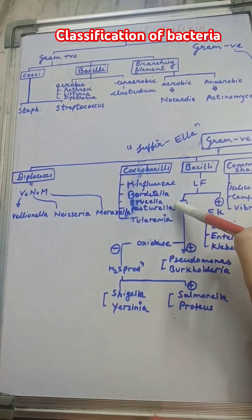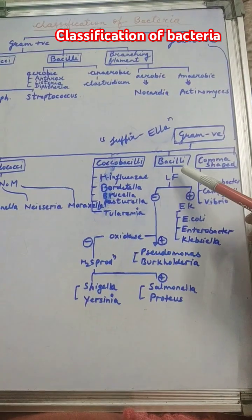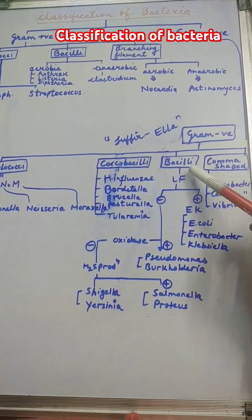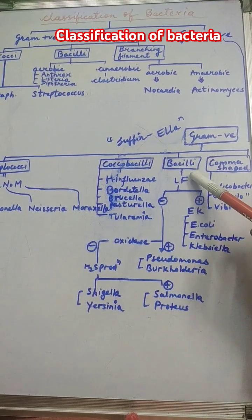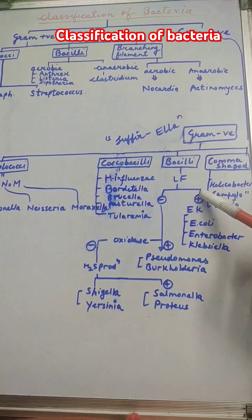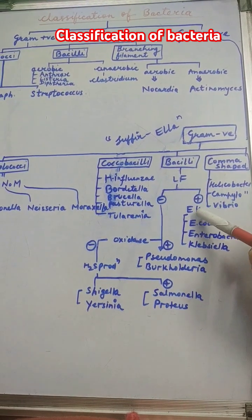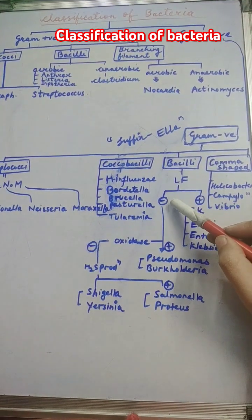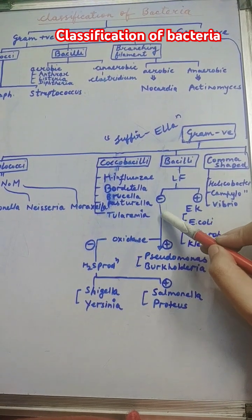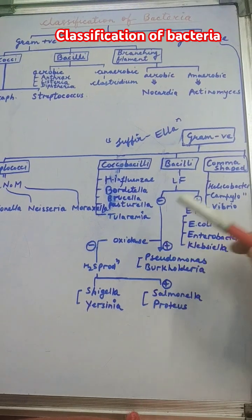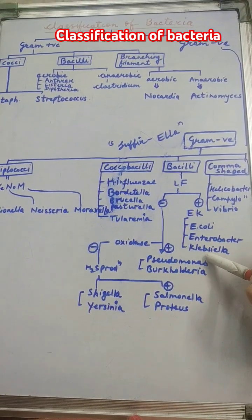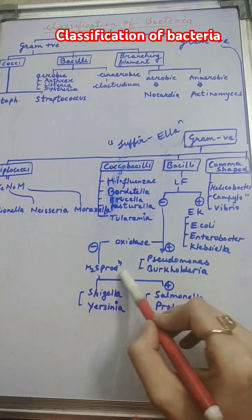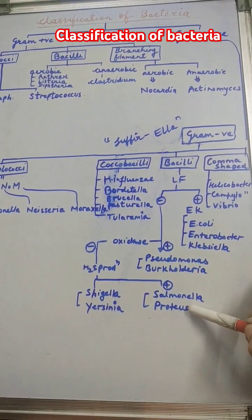In gram negative bacilli, we divide based on lactose fermentation. Lactose fermenters include E. coli, Enterobacter, and Klebsiella. Non-lactose fermenters are then divided on the basis of the oxidase test: oxidase positives are Pseudomonas and Burkholderia.